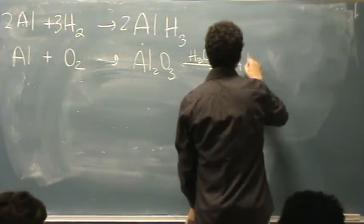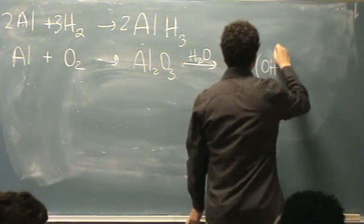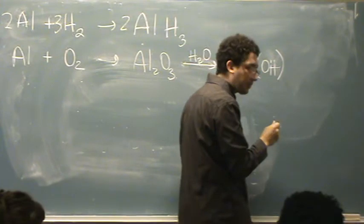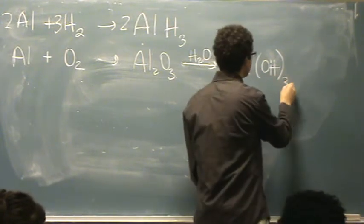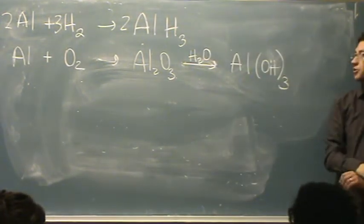So whenever you add water, you make the hydroxide. It's Al3 plus and OH minus 1, so it's AlOH3.